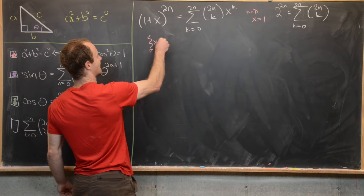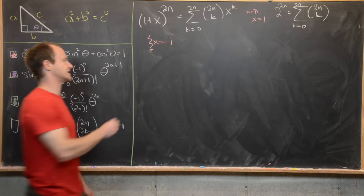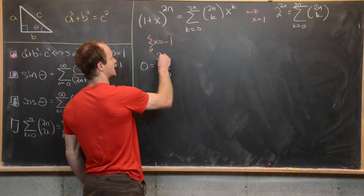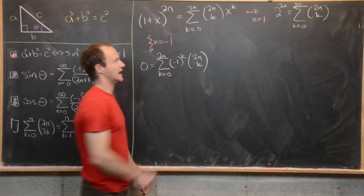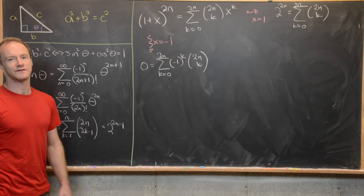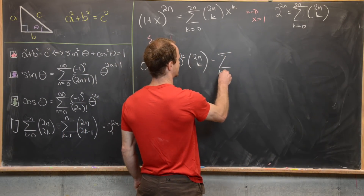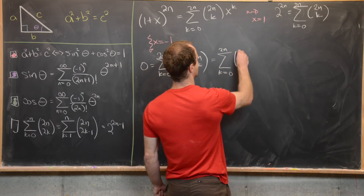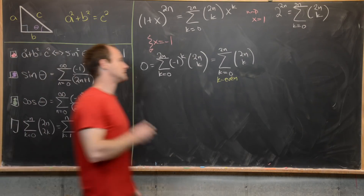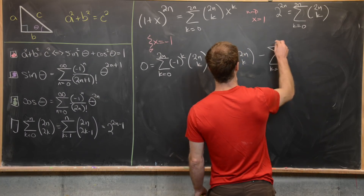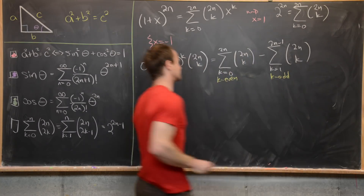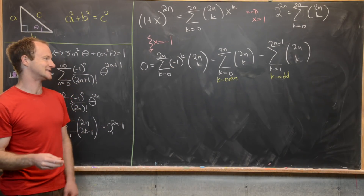Now set x equal to negative one. That gives zero on the left-hand side, and on the right-hand side an alternating sum: the sum as k goes from zero to two n of minus one to the k times two n choose k. Expanding this into two series — one with all even terms and one with all odd terms — we get the sum over even terms minus the sum as k goes from one to two n minus one of two n choose k over odd terms.